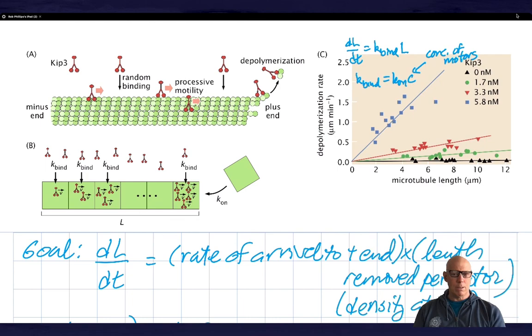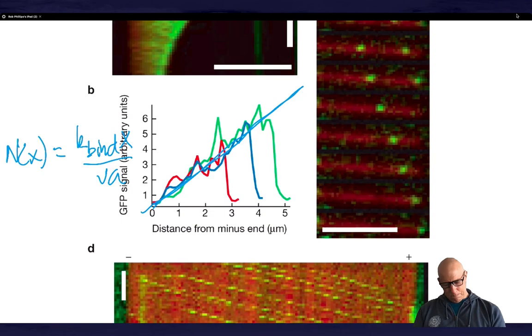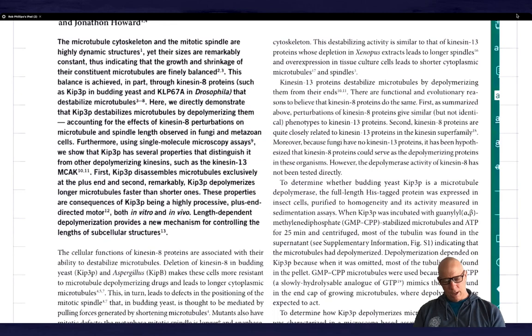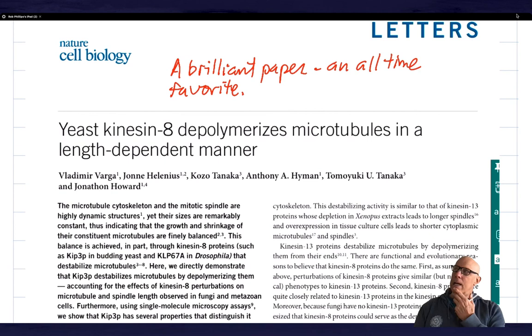This is our first introduction to this particular problem. But what we've done is we've once again used our rate equation mentality in order to attack a really fun and interesting experiment, this thing from the Joe Howard lab. And we wrote down a rate equation. We went for a steady state in the steady state setting. We were able to figure out the distribution of motors on the microtubules. And we were also able to figure out the rate of depolymerization. All very interesting and cool.